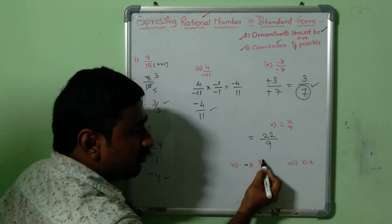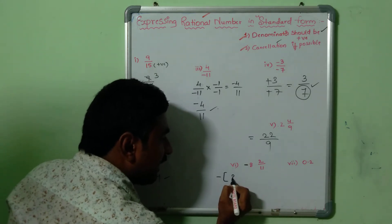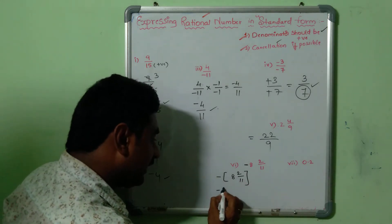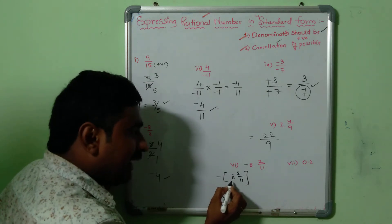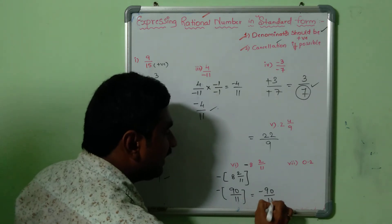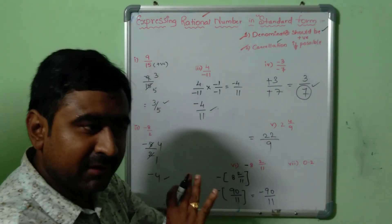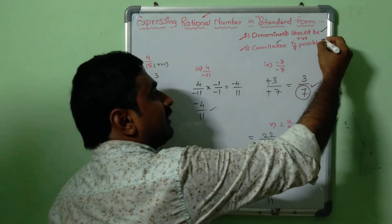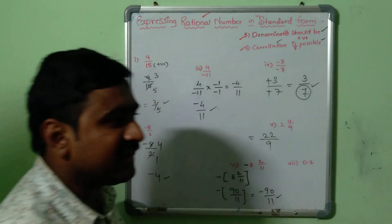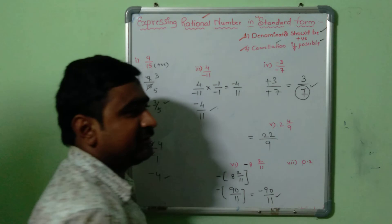Sixth example: −8 2/11, a mixed fraction with a negative sign. Separating the minus: 11×8=88, then 88+2=90, giving −90/11. First step — denominator 11 is positive, no issue. Second step, cancellation: 90 and 11 have no common factor. So −90/11 is the standard form of −8 2/11.